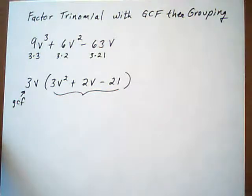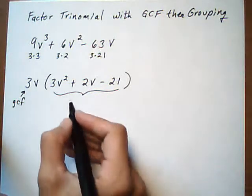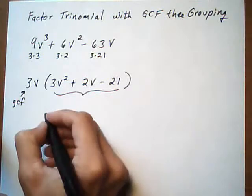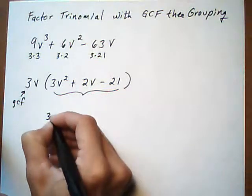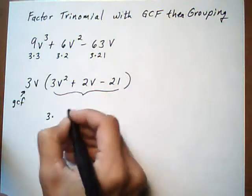Alright, so 3V squared plus 2V minus 21. Let's take a look at factoring it by grouping, which means take the first term times the last term,